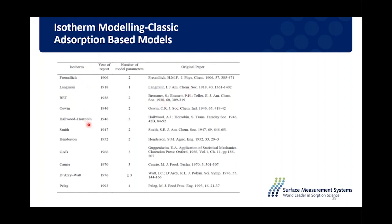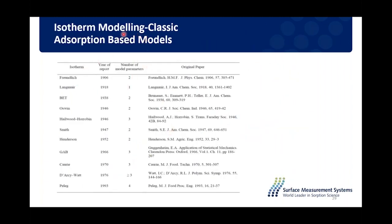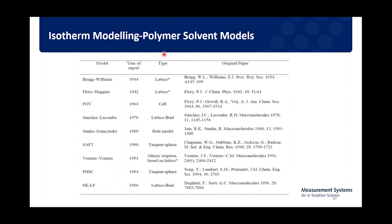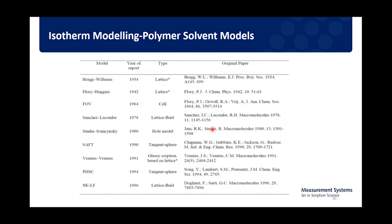Once you measure the isotherm — the uptake as a function of relative humidity — there are a wide range of surface-based and polymer-solvent-based isotherm models that give an indication of how the moisture or vapor is interacting with the sample. Some cluster-based models apply when water doesn't wet the entire surface; you might have hydrophilic and hydrophobic regions. The isotherm shape — whether a classic type 2 or type 3 — can reveal whether you get islanding or clumping on the surface as opposed to complete wetting.